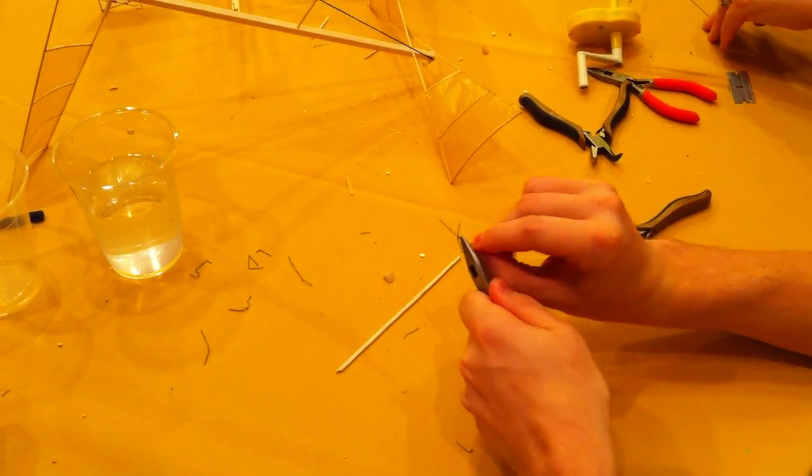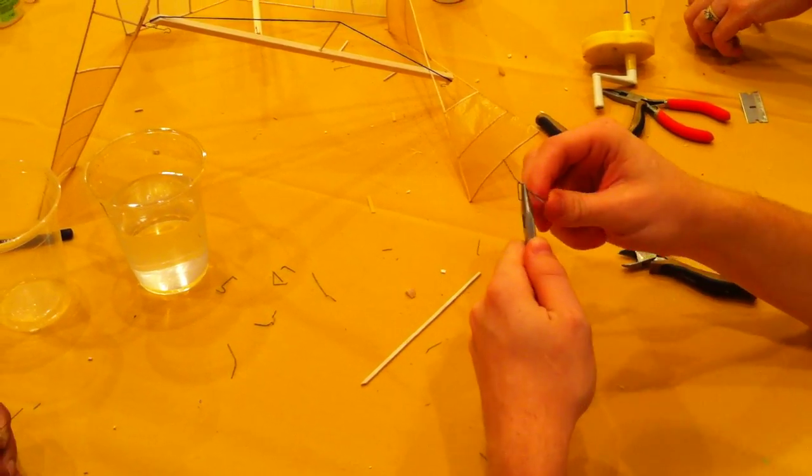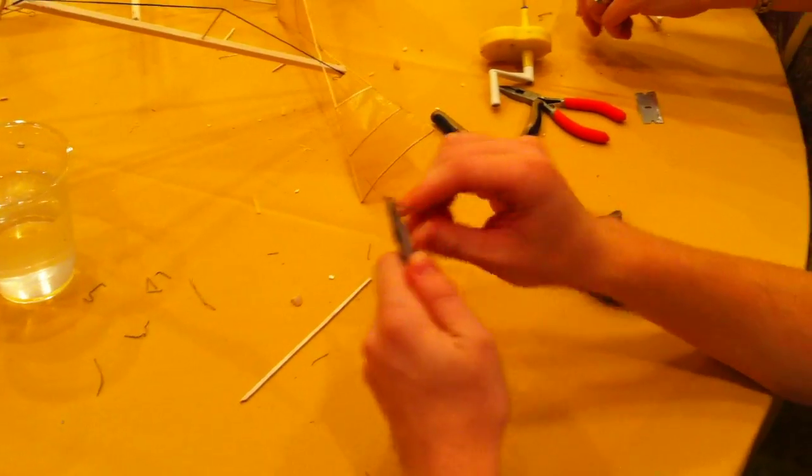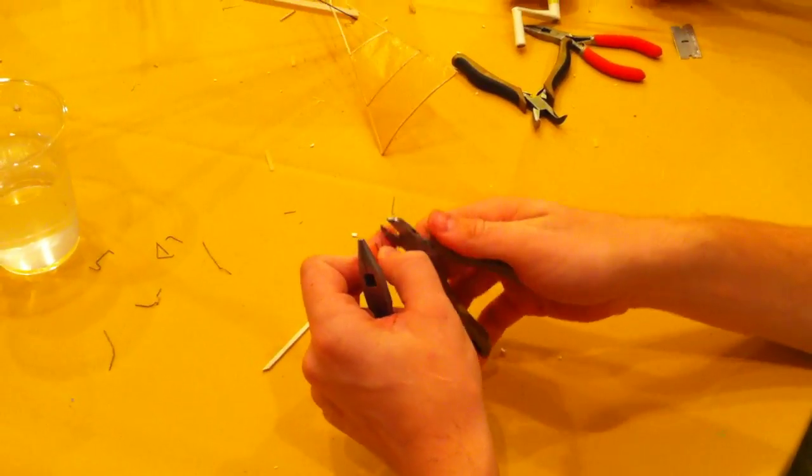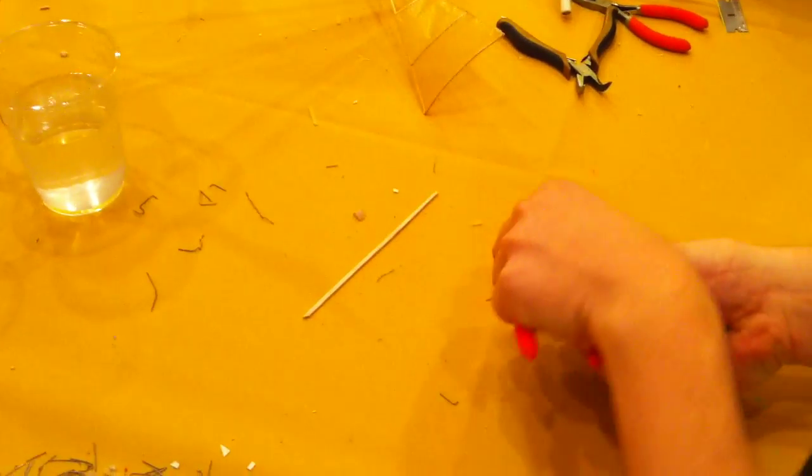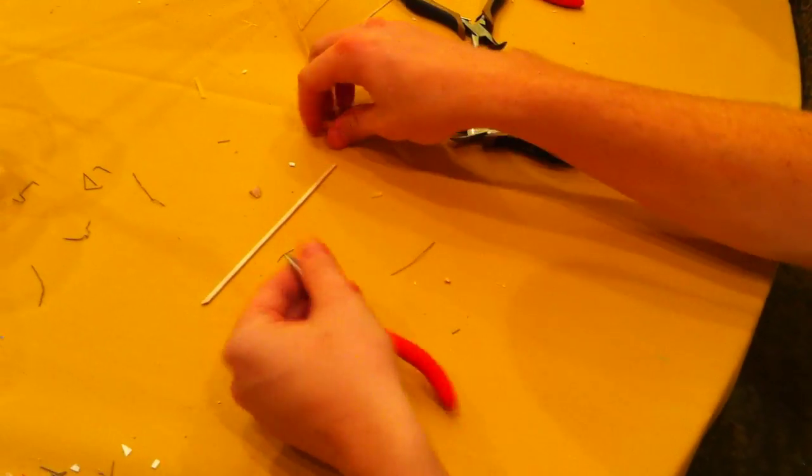Yeah, so bend it all the way around. And so I just twisted it. And I have basically a completed pigtail now. I have an essentially completed thrust bearing. Trim off the excess. And we're pretty much good.